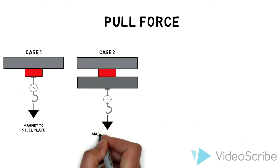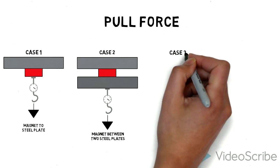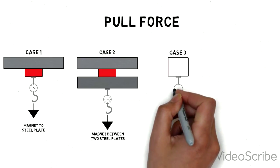Case two has the magnet sandwiched between two steel plates. Using the same process, the gauge measures the force required to pull one of the steel plates off of the magnet.